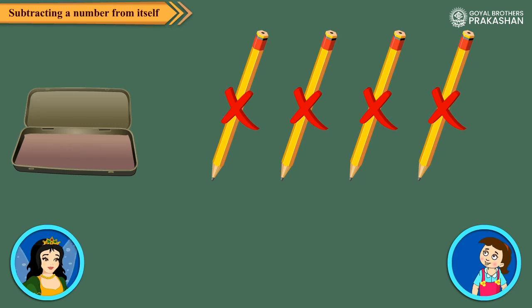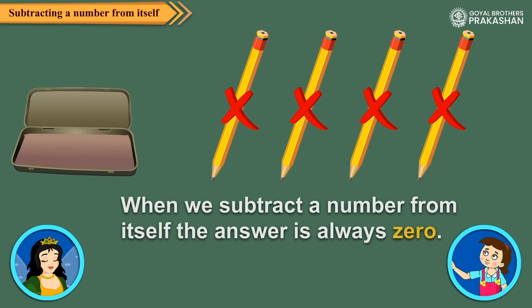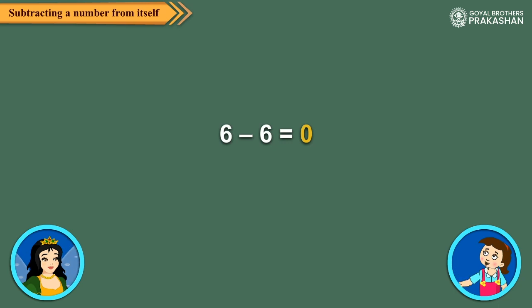Zero. So, when we subtract a number from itself, the answer is always zero. That means 6 minus 6 is zero and 9 minus 9 is zero.